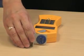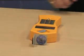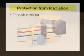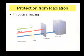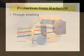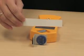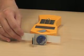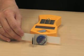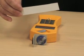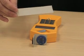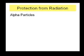Now besides distance, another way that we can protect ourselves is through shielding. Alpha particles can be stopped with paper, skin, or clothes. Let's see what happens if I cover this with a piece of paper. It makes no difference — this is not an alpha emitter.